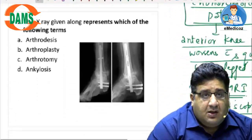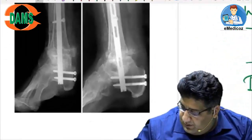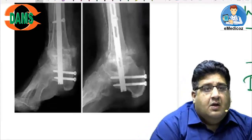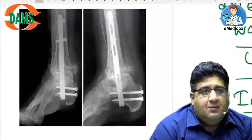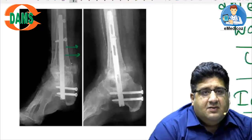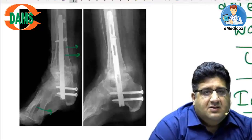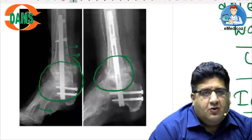The X-ray given represents which condition? In this X-ray of the lower limb, you can see the tibia, fibula, lateral view, and metatarsals. The joint is distorted, disorganized, has debris, and is distended — it is a clear-cut neuropathic joint disease, also called Charcot's joint. The most common cause in a country like India is diabetes mellitus.